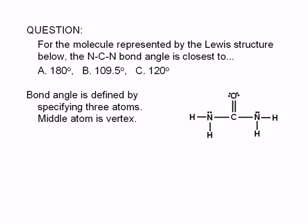A bond angle is defined by specifying three atoms. The middle atom is called the vertex of the angle. Imagine a line from the first atom to the vertex, and a line from the vertex to the second atom. For this question, our vertex is the carbon atom.